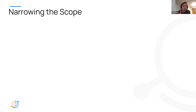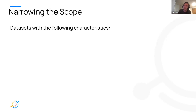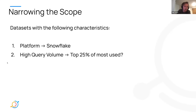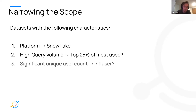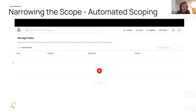Step two, we're going to narrow the scope. In our case, we've got tons of data assets. We can't just say the platform is Snowflake, but we'll start with that. Maybe we have 5,000 tables in there. We can scope that down further and look for the important assets in Snowflake — defining important as having a high query volume, being in the top 25% of most used, and having significant unique user count, which we define as any table with greater than one user in the last 30 days. We'll scope our initiative to those data sets.